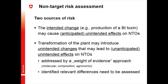Eventually we come up with two potential sources of risk for BT maize — two ways in theory how it could harm non-target organisms. One is the anticipated effect: the intended change making the plant produce a BT toxin might have unintended effects on non-target species. The other is unanticipated unintended changes that can also have unintended effects on NTOs, and that's where the comparative approach comes into play.